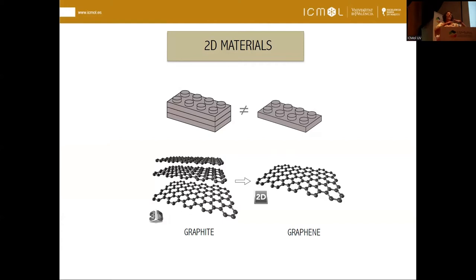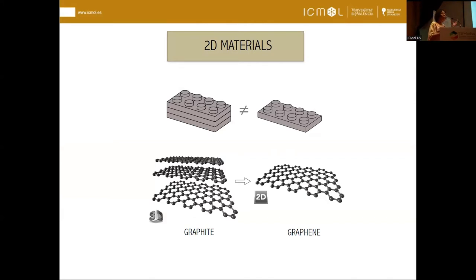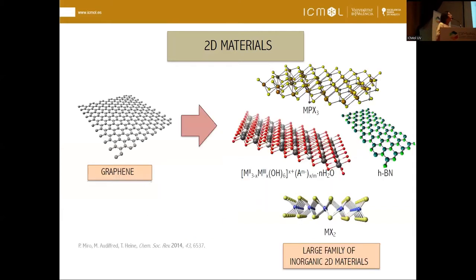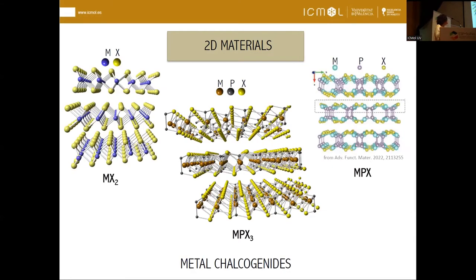You already know that we have materials that are stacked layers that can be separated, and when you get ultra-thin layers — these 2D layers — we get really interesting and new properties due to the confinement of electrons in two dimensions and due to the large surface area. We know this for graphene from graphite, but there are of course a lot of inorganic materials that have increased the interest in two-dimensional materials. Among them, we are especially interested in the families of metal chalcogenides, which present different crystallinities, structures, and a plethora of different properties.